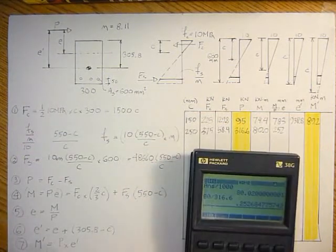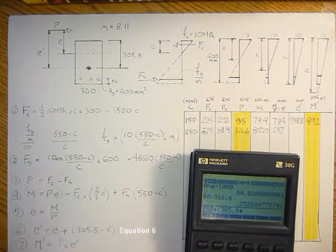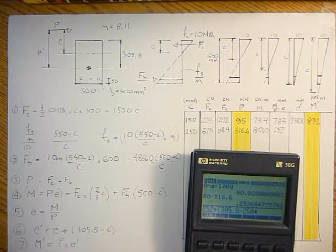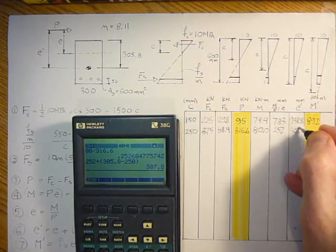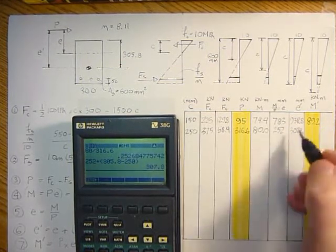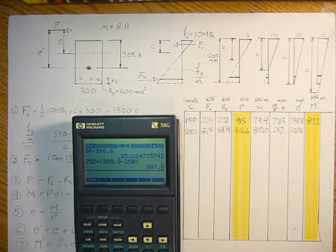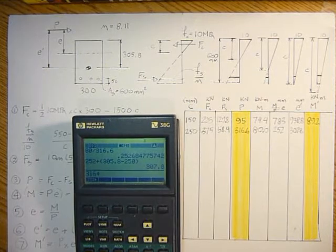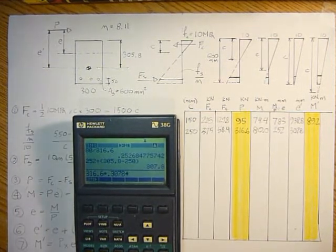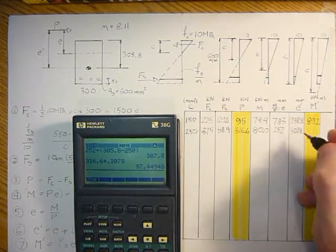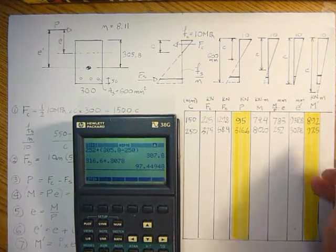And then E prime is 252 millimeters plus 305.8 minus 250, that will give me 307.8 millimeters. And M prime would be this value times this value to give me our moment for the interaction diagram: 316.6 is the axial times 0.3078 meters, that gives me 97.5 kilonewtons meters.